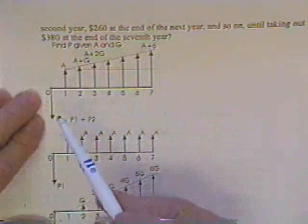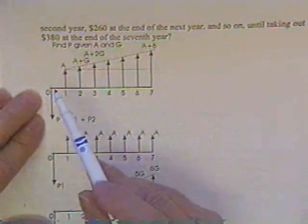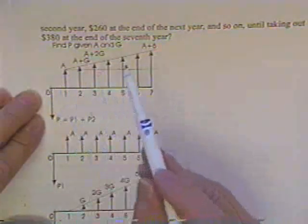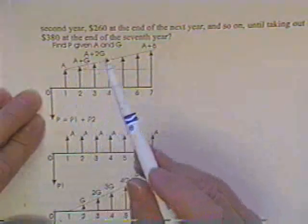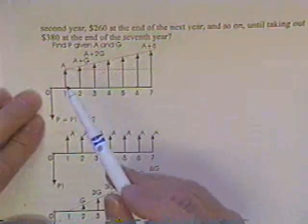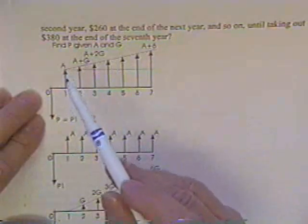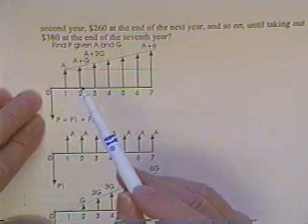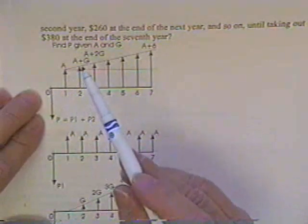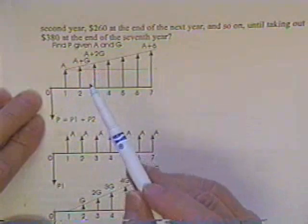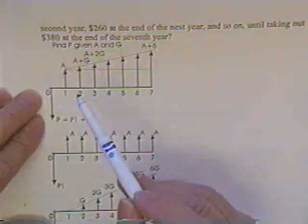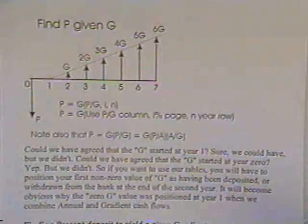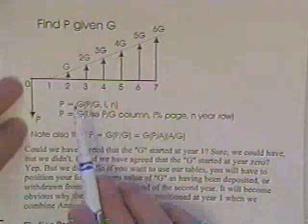Put the money on time zero, if it's a present value you're willing to invest today, then how much you can take out of the bank, if you want to take it out in gradient fashion, put the annuity starting on time year one, and put the first non-zero gradient number at the end of year two.